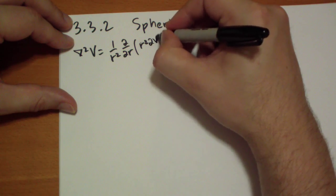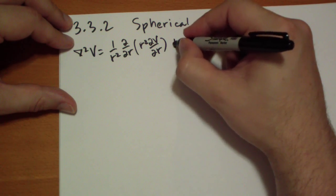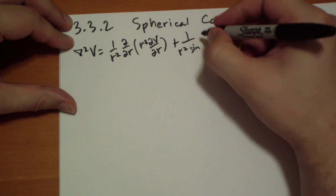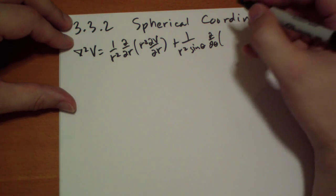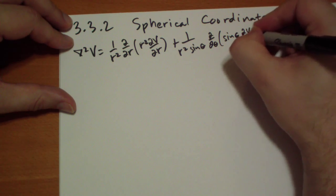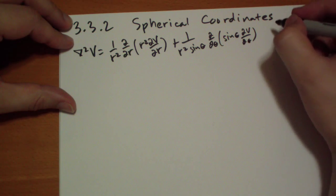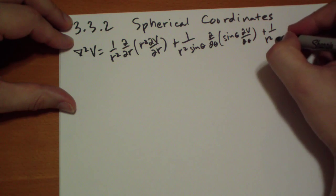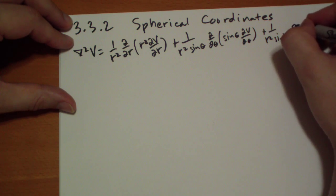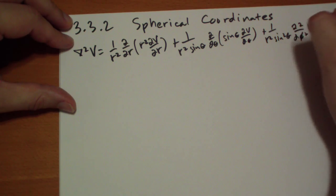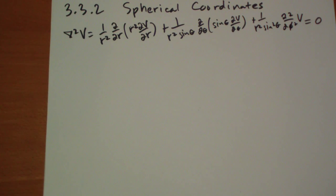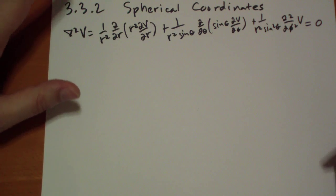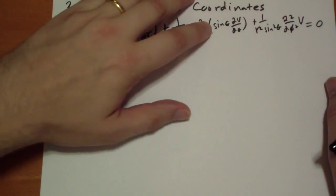So, 1 over r squared d by dr of r squared dv by dr plus 1 over r squared sine theta d by d theta of sine theta dv by d theta. Am I going to fit it? Probably. Plus 1 over r squared sine squared theta d squared by d phi squared. If you memorize that, you probably deserve a pat on the back. Once again, there's three components. Each of them have a double derivative. Sometimes there's this funky term that you have to put in the middle.